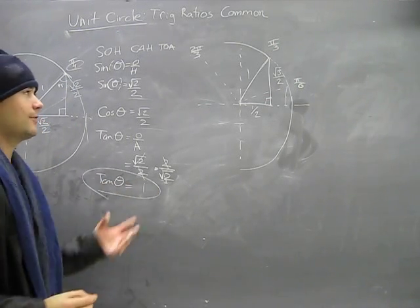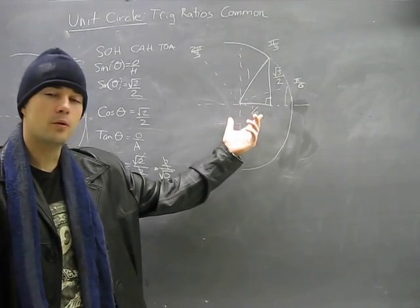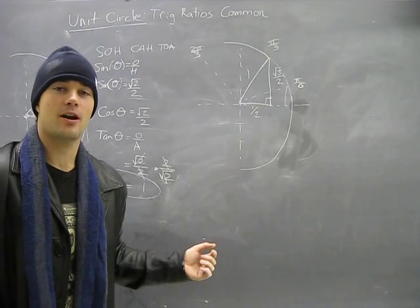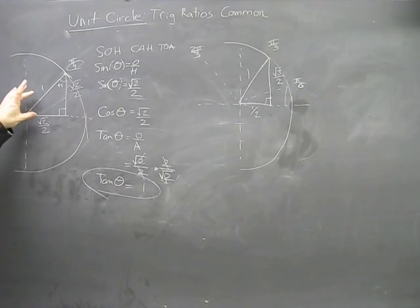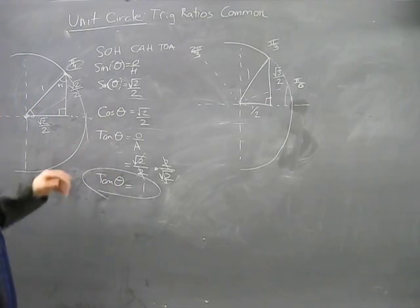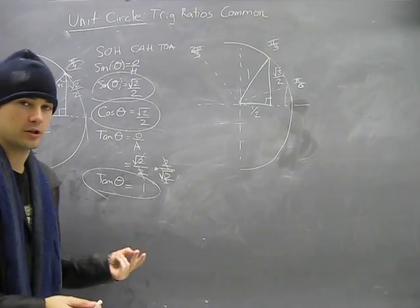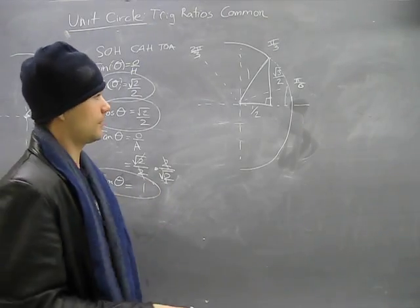Do we have to memorize this stuff? No! Not even close. All we have to know is the sides of these triangles. That's it. If you know the sides of the triangle, you know how to get them. Memorize the sides of the triangle, you should be able to nail down these ratios. I mean, this is just monkey work right now.